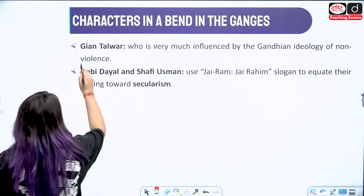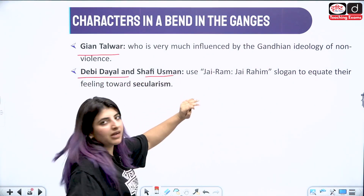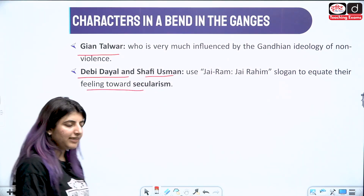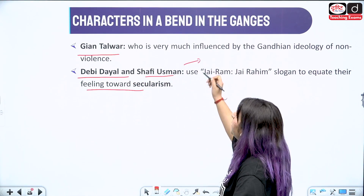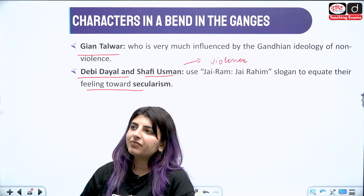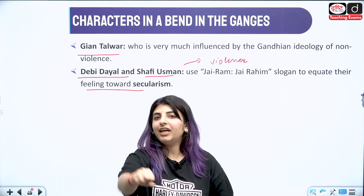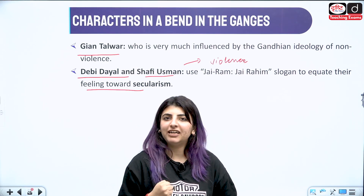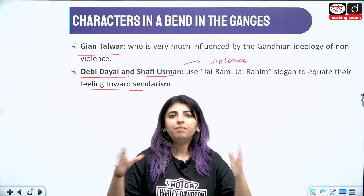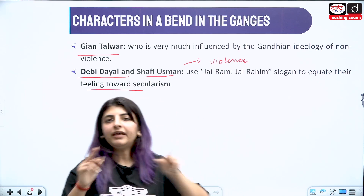The protagonist here is Gyan Talwar, who is very much influenced by the Gandhian ideology of non-violence. We see that during those times there were people who would use violence to take what was theirs, and there were people who still said no — we don't take to arms, we use our own good means. So we see these contradictory spheres ruling in the work A Bend in the Ganges.